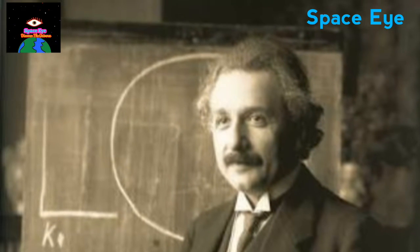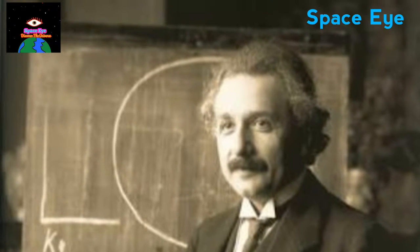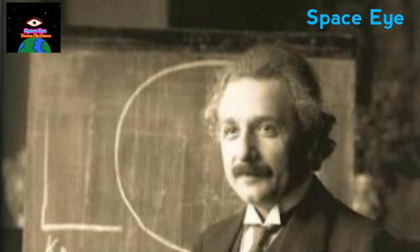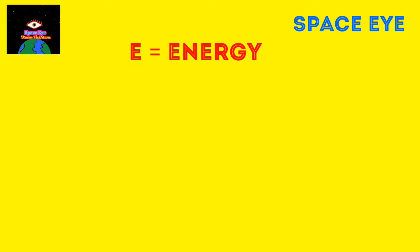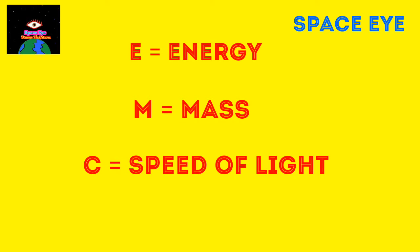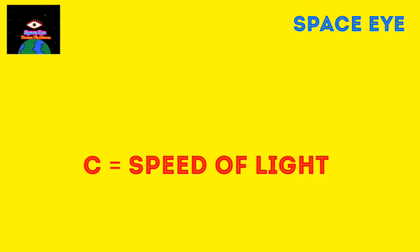It is one of the most famous equations of Albert Einstein. E equals to energy, M equals to mass, and C is the speed of light.